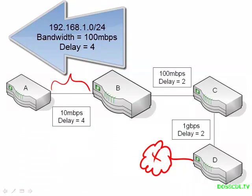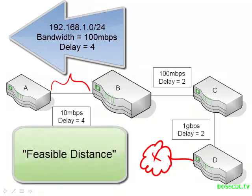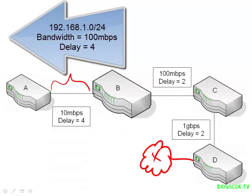Router A will come up with its own metric to get to the destination off of router D. This particular metric that router A calculated itself has a very specific name — it is known as the feasible distance, which is simply the metric calculated by the router. Router B sends route information to router A, that metric is the reported distance. Router A takes the reported metric, adjusts it to account for the new link, and comes up with its own metric — that new metric, relevant only to router A, is the feasible distance. Spend time to understand the difference between those two terms, because they are used constantly when discussing how routes are created in EIGRP.